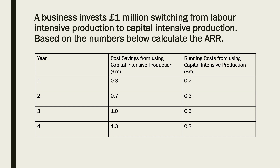The question is: a business invests £1 million switching from labour intensive production to capital intensive production. Based on the numbers below, calculate the ARR.